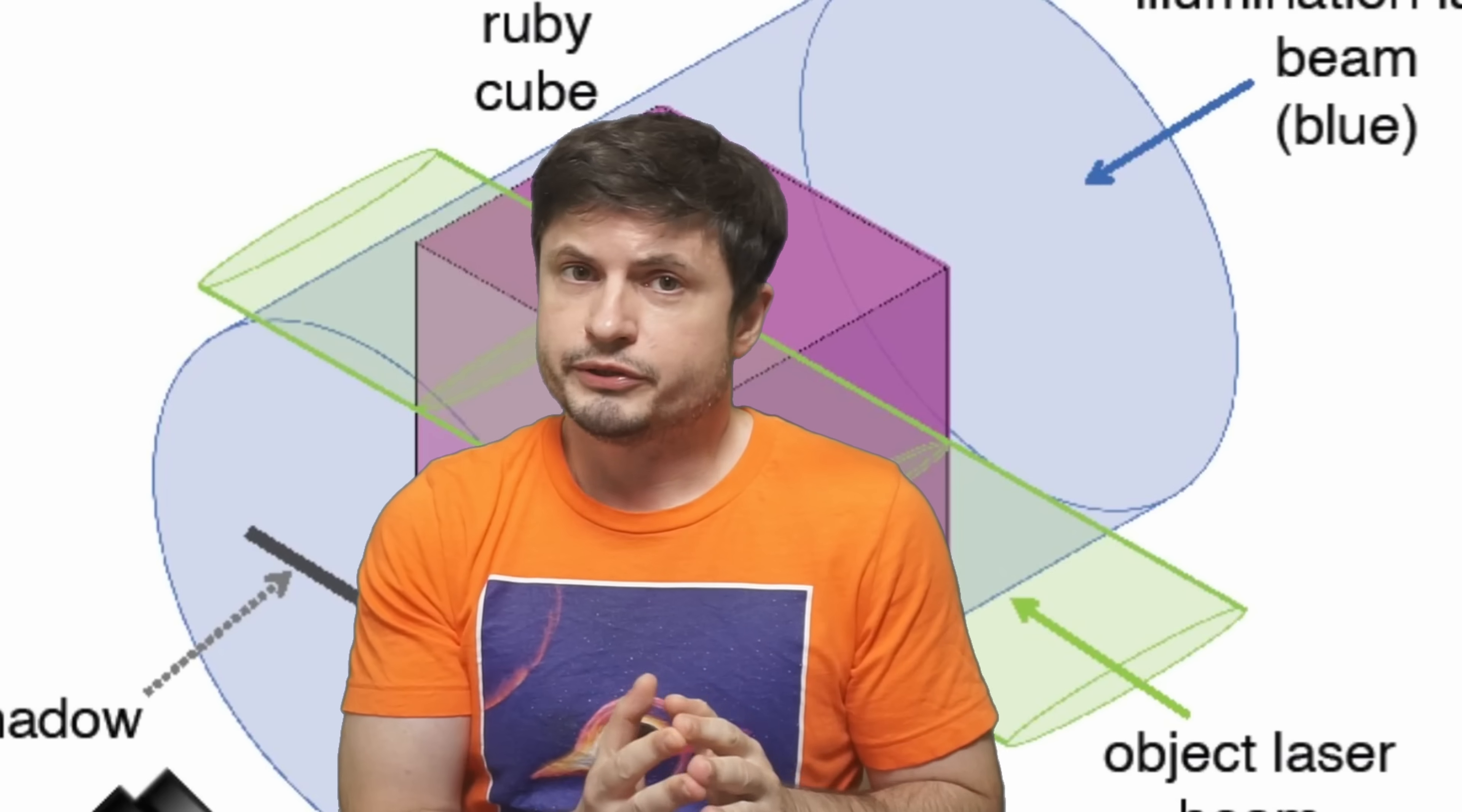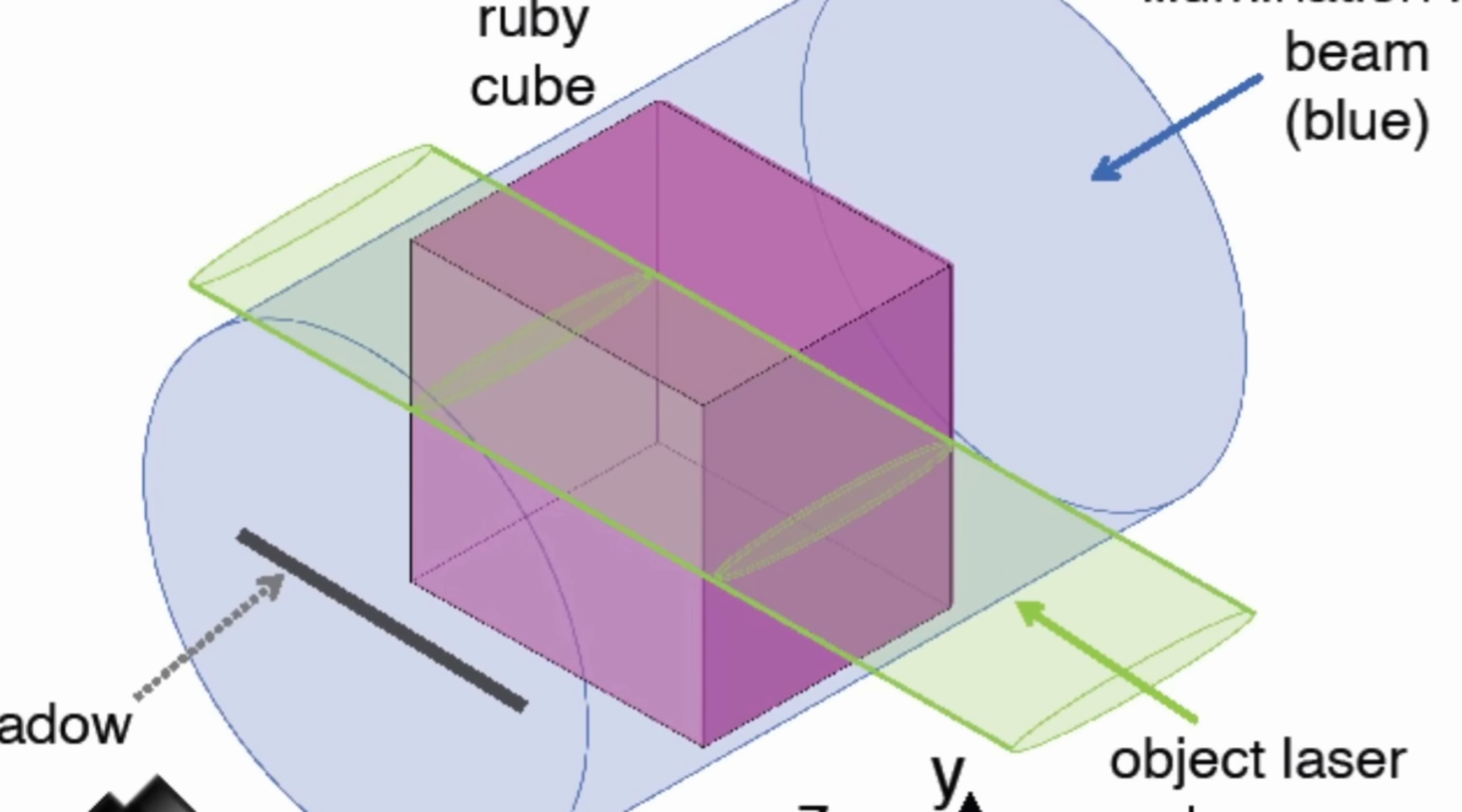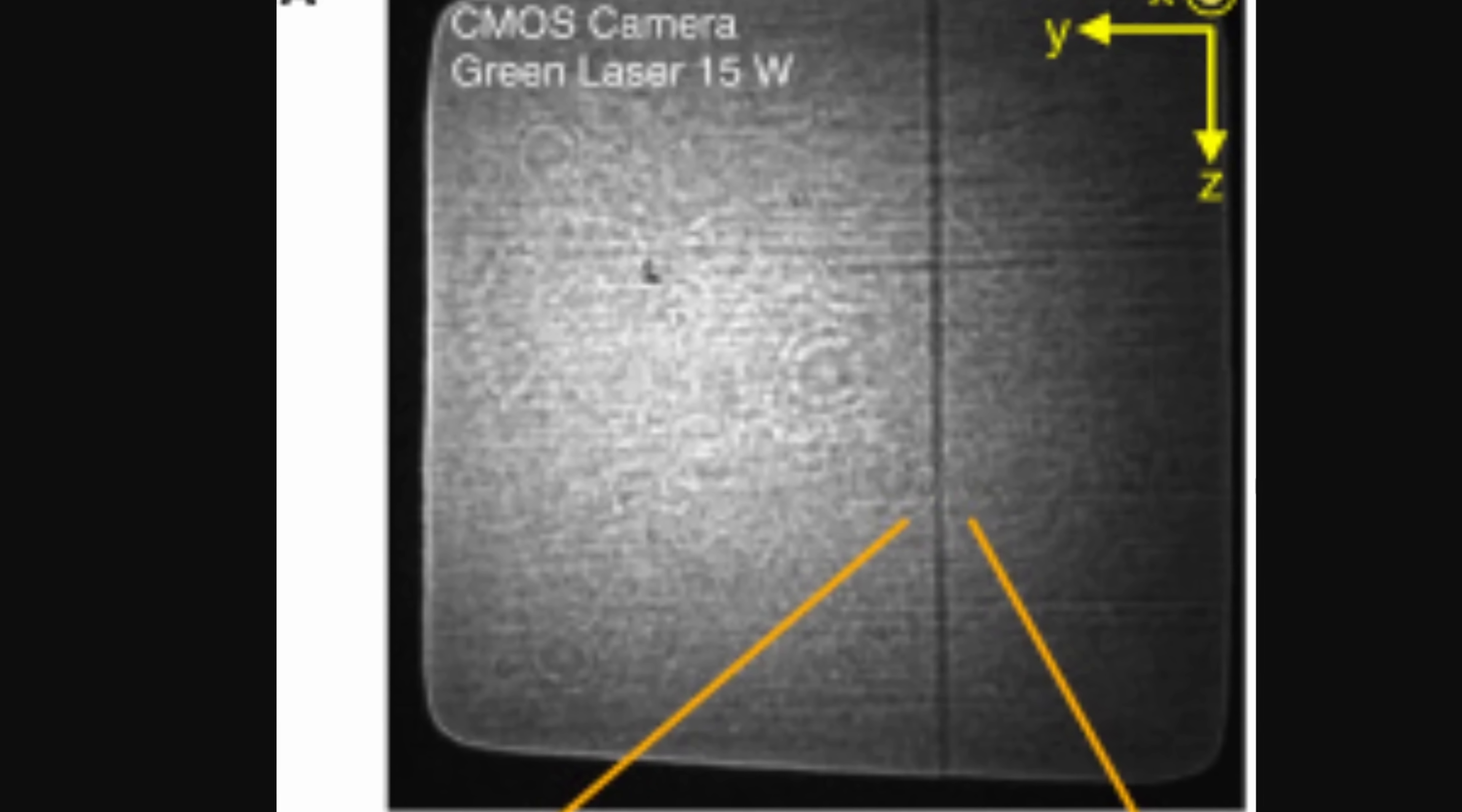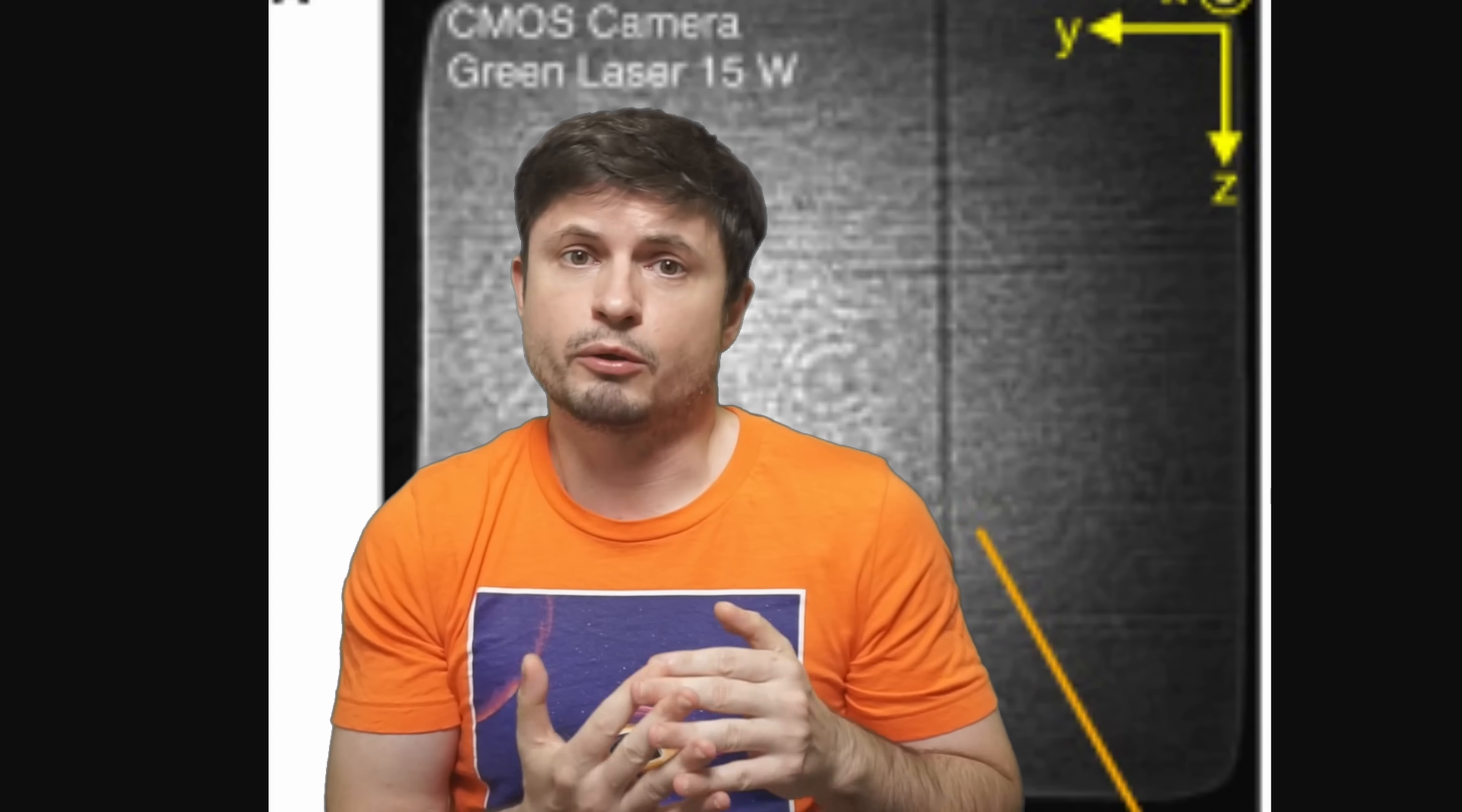And so even though technically here, we still have an object, in some sense, responsible for this shadow, here, the object being this ruby cube, the shadow itself is still actually formed by lasers, because the photons of blue light are only absorbed along the interaction line formed by the green laser beam. And so here, this is known as optical nonlinear absorption, the phenomenon that turns this green laser into a physical object, or at least creates a bit of a paradox, because here, this shadow has to be explained through different means.